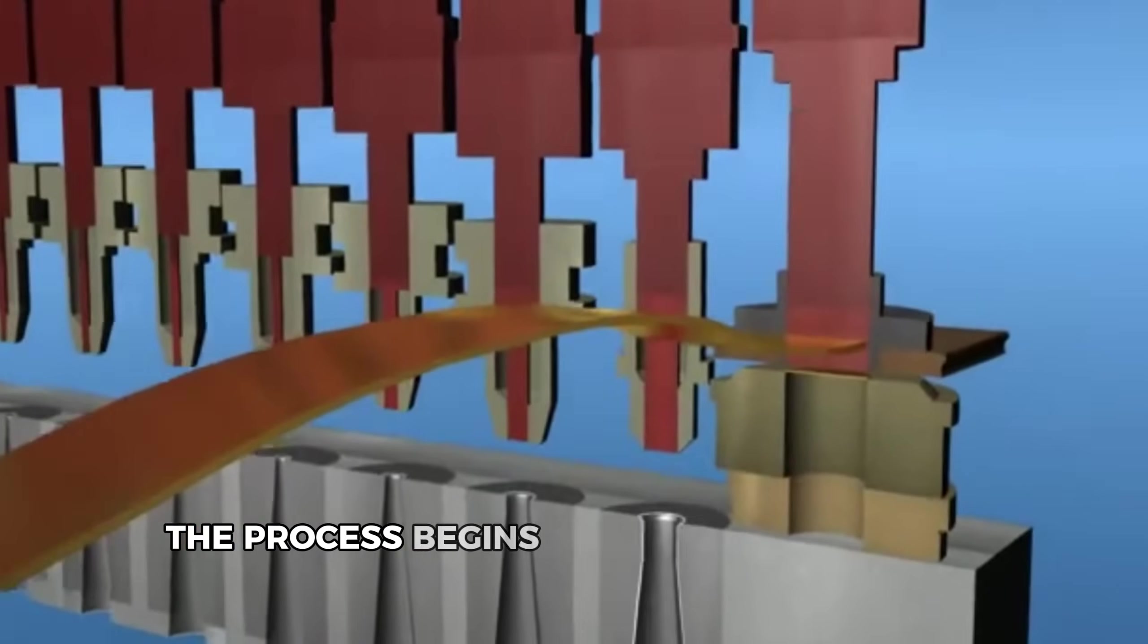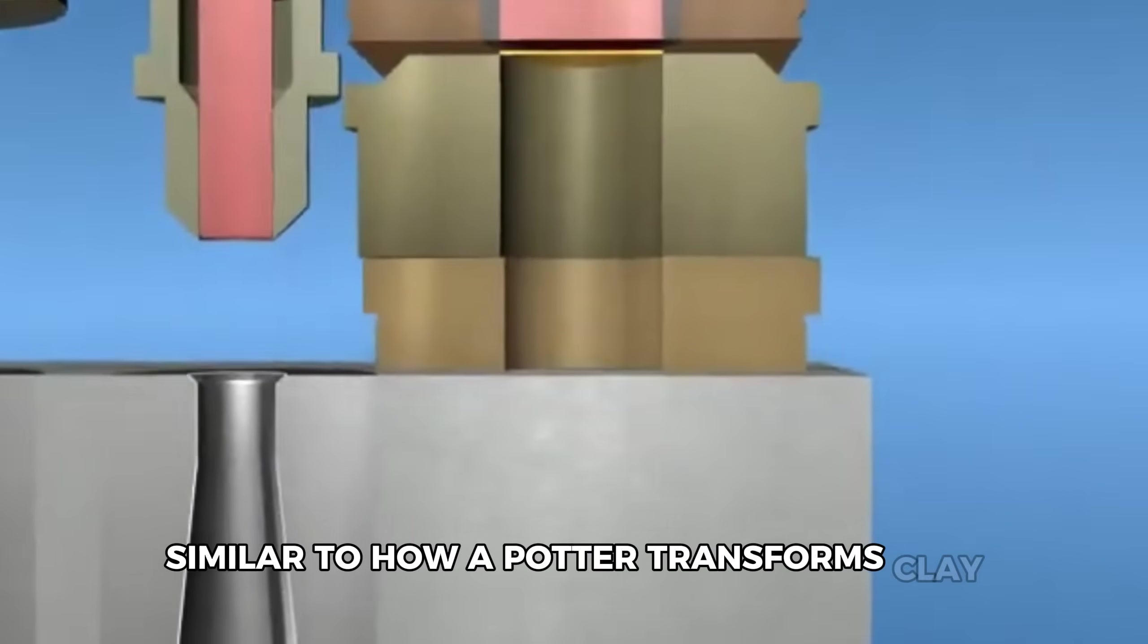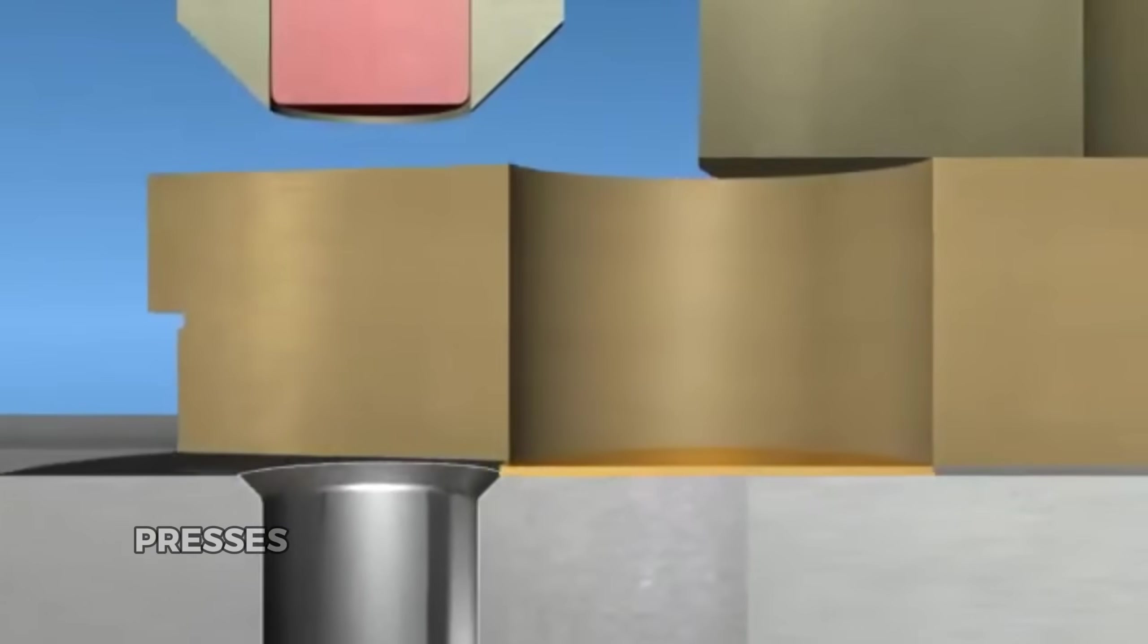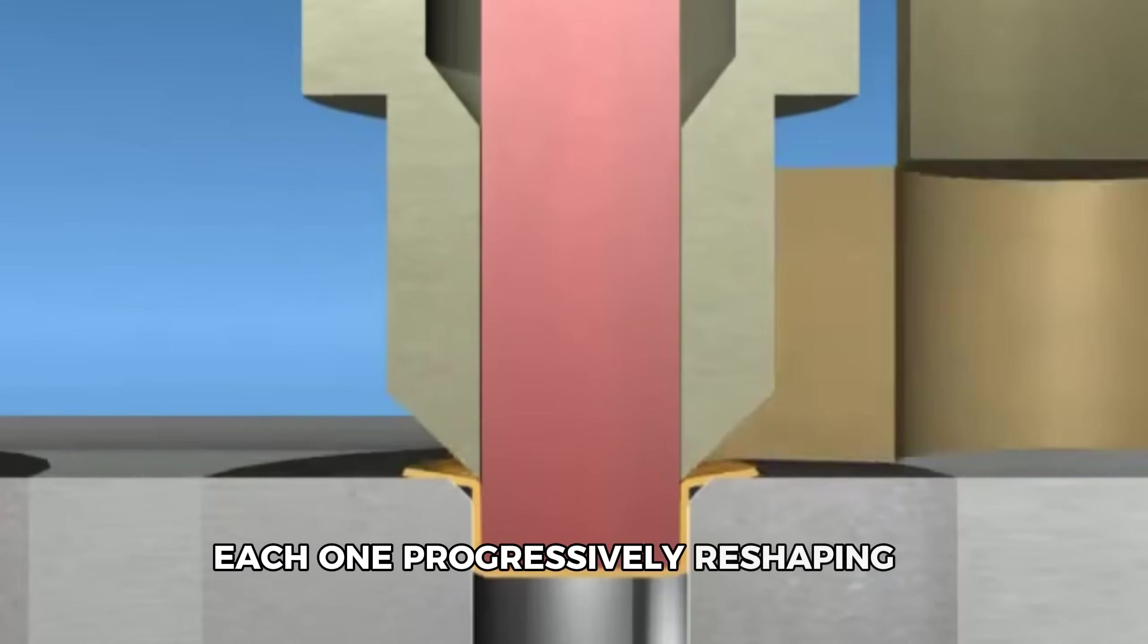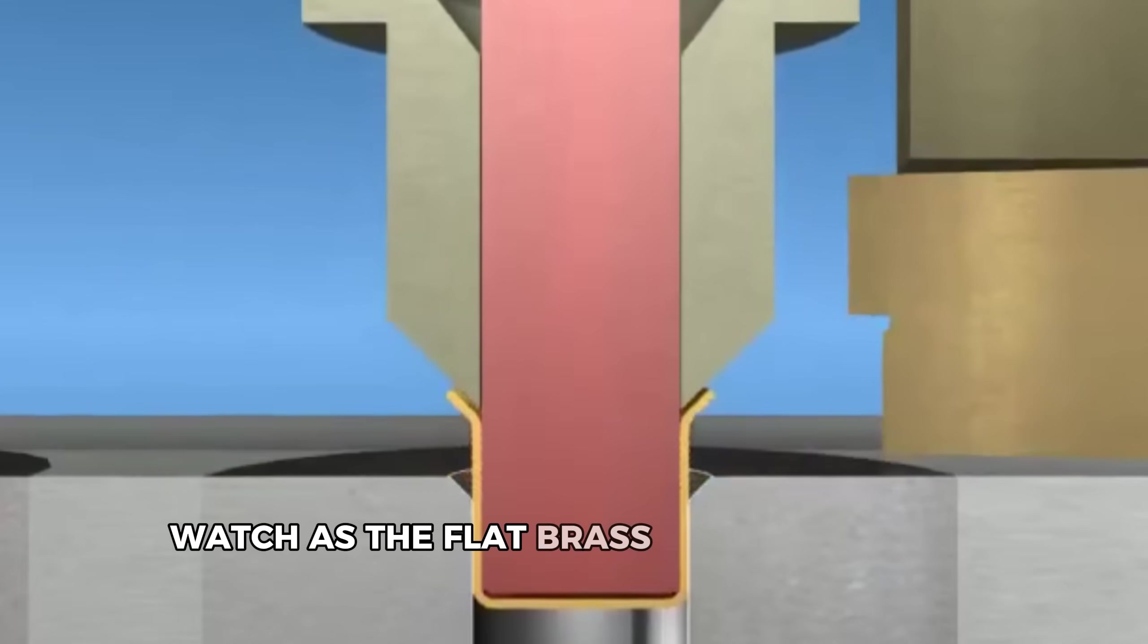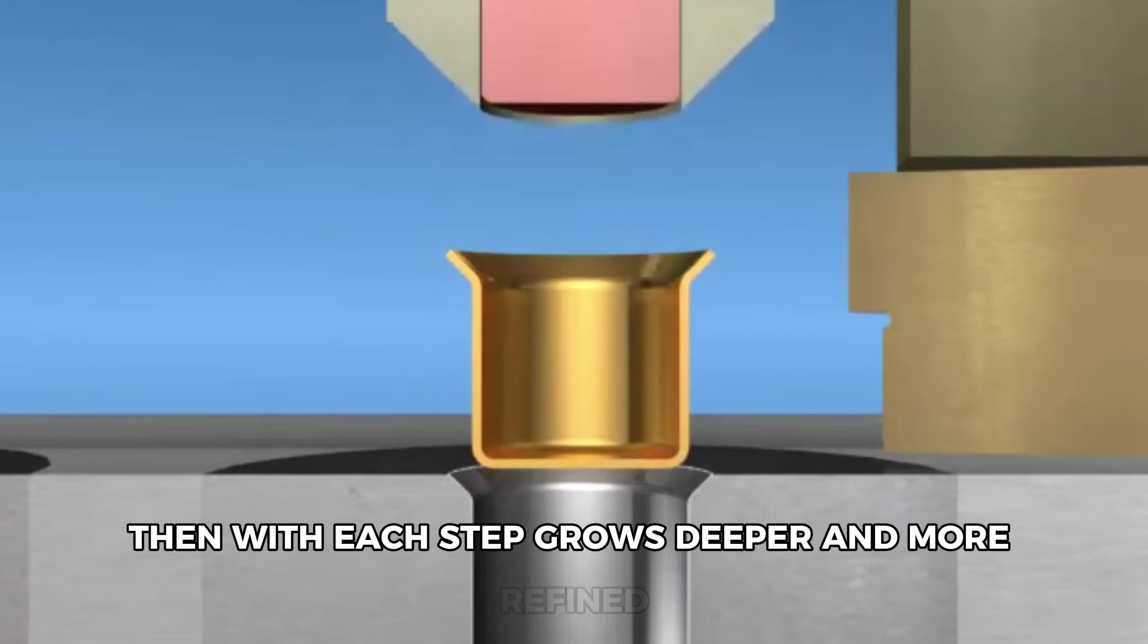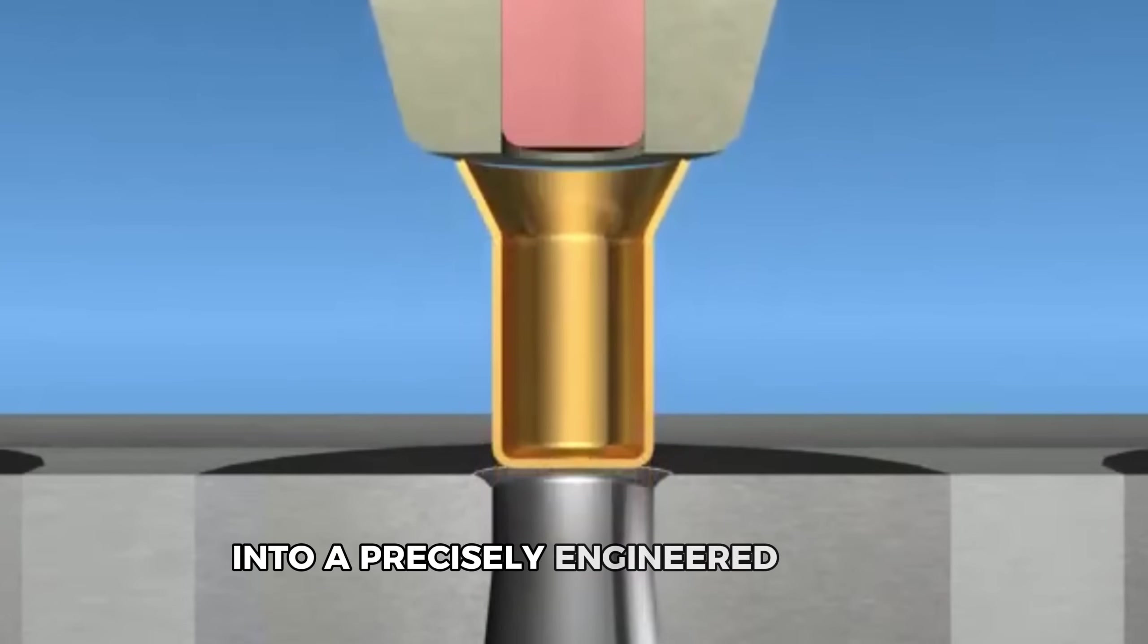The process begins with simple sheets of brass. Similar to how a potter transforms clay, these machines mold flat brass through a process called drawing. Transfer presses move the metal through a series of dies, each one progressively reshaping it. Watch as the flat brass first becomes a shallow cup, then with each step grows deeper and more refined, transforming from a flat disc into a precisely engineered vessel.